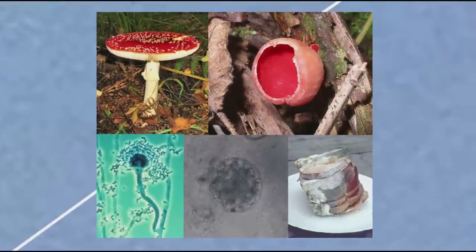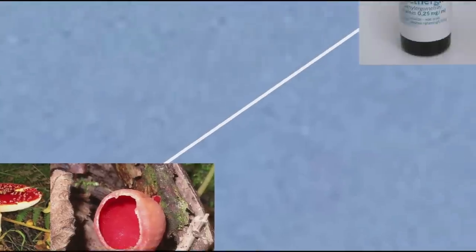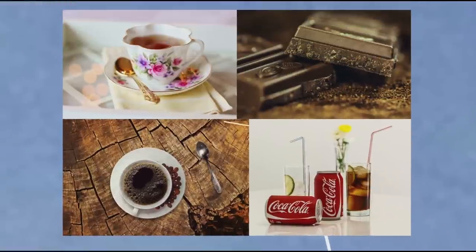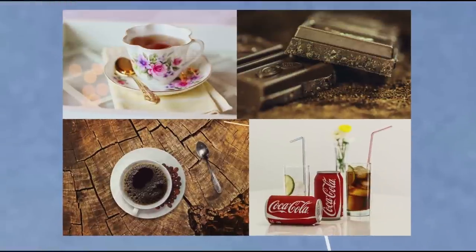Ergot, like many fungi, contains alkaloids which can have powerful effects when ingested — sometimes fatal ones. Alkaloids can be poisonous or psychoactive, causing hallucinations, but also can be useful drugs to treat things such as migraines, malaria, and cancer, induce childbirth, and prevent postpartum hemorrhaging. Psychoactive alkaloids are not only used as illicit hallucinogenic drugs, but are also found in everyday food and drinks, such as caffeinated beverages and chocolate.